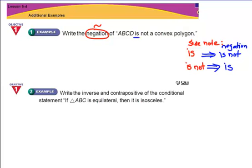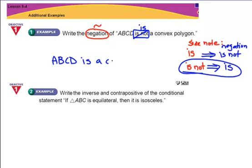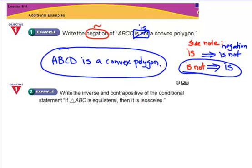And I see right away, I have the word is not. So referring to this, in order to negate it, I have to change this word is not to the word is. So my statement is going to be, ABCD is a convex polygon. There's my answer, and I'm done. I wrote the negation of that statement.